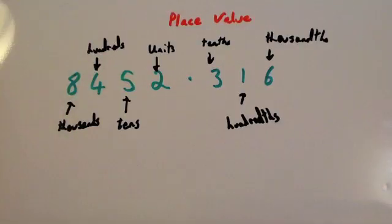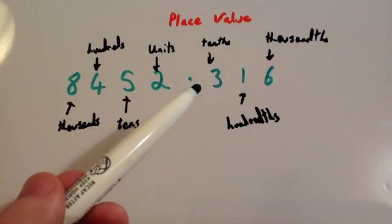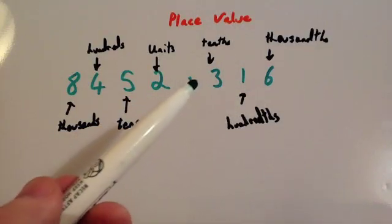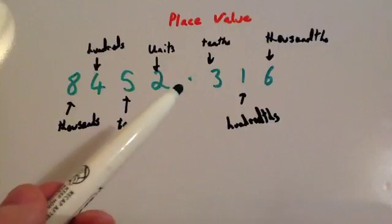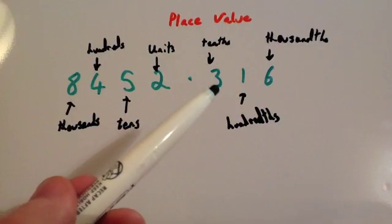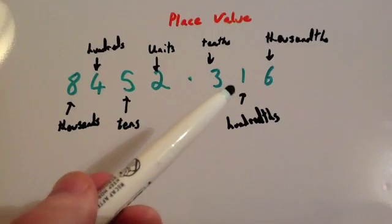In this video we're going to look at place value. So I've written a number 8452.316. Notice why I don't say 0.316 - whenever you get to the decimal point you then just say each digit separately, like 316.